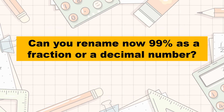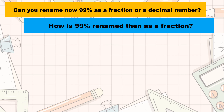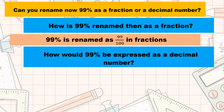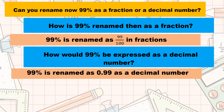Now, let's go back to the question I posted earlier. Can you rename now 99% as a fraction or a decimal? I think you surely can. How is 99% renamed as a fraction? If your answer is 99 over 100, or 99 hundredths, you are correct. And how would 99% be expressed as a decimal number? If your answer is 0.99, or 99 hundredths in decimals, you are excellent.